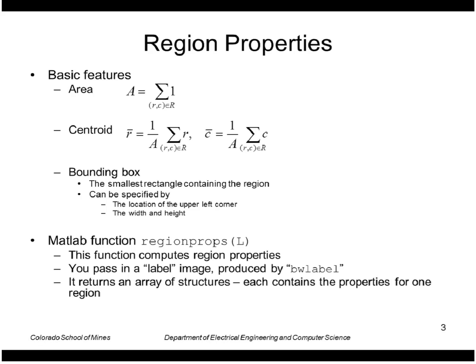The MATLAB function region props computes these properties as well as others. You pass in a label image such as produced by BW label, so that is the labeling of all the connected components. And region props returns an array of structures where each structure is the properties for one region.